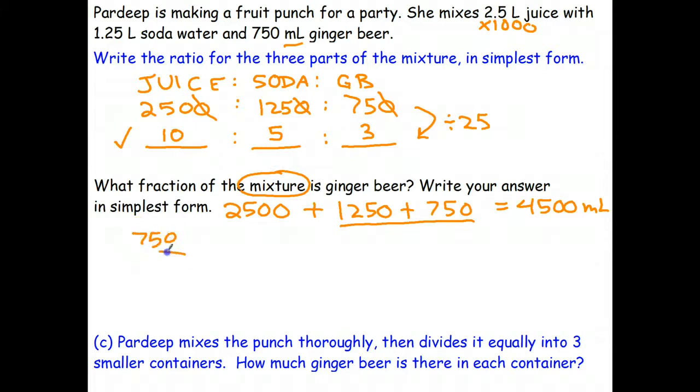What fraction of that is ginger beer? Well the ginger beer is 750 divided by 4,500. I can divide both of those by 10, that gives me 75 over 450. Once again 25 goes into each of those. So 75 divided by 25 is 3. There's 18 25s in 450. And finally I can divide both of those by 3. And in simplified form, 1 sixth of the mixture is ginger beer.